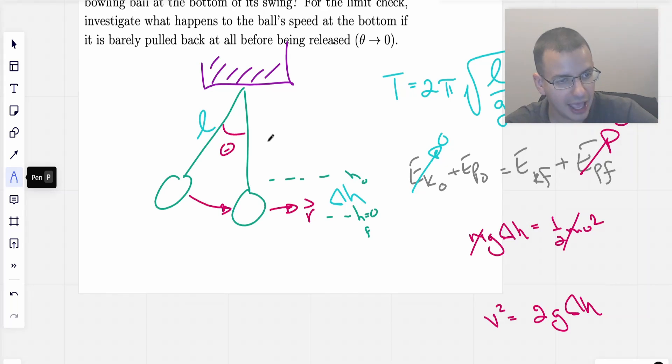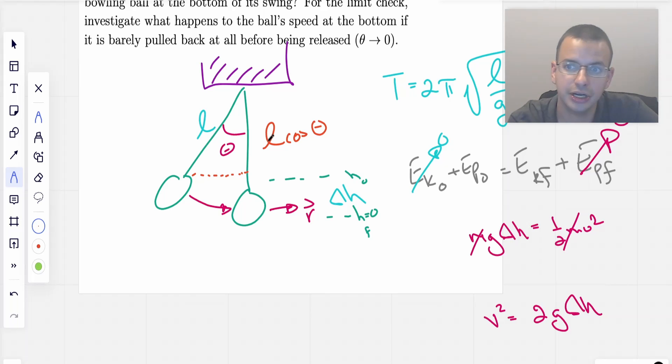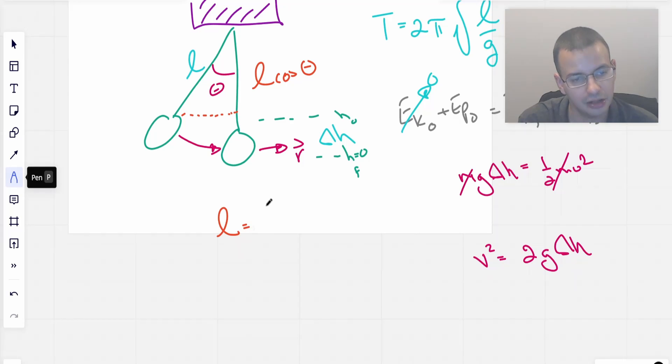So looking at our picture, this is going to be the length L of the taut string, taut like a tiger. And this right here, if we do a triangle, so SOHCAHTOA, cosine of theta, cosine of theta is opposite over adjacent. We do some trigonometry, we would find this is L cosine theta.